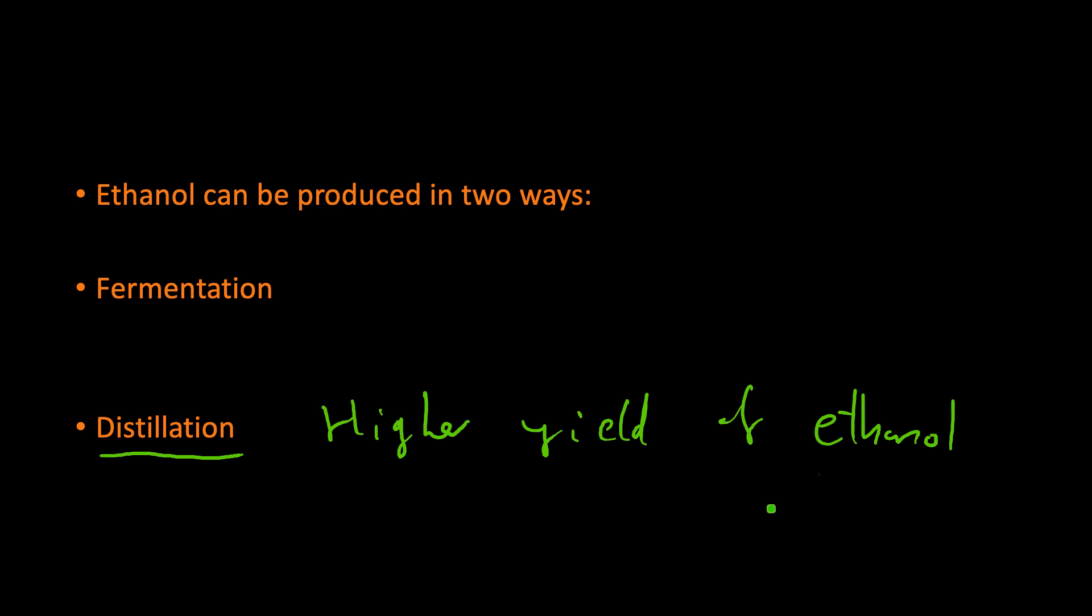Because for things like fuels and solvents using ethanol, you want it to be really really pure and you want to get a load of it. Fermentation does not do that. Fermentation cannot produce alcohol of a high purity.